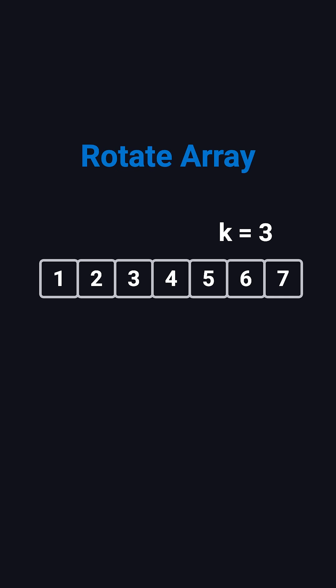For example, if the array is 1, 2, 3, 4, 5, 6, 7, and k equals 3, after rotation, it becomes 5, 6, 7, 1, 2, 3, 4. The last three elements move to the front.